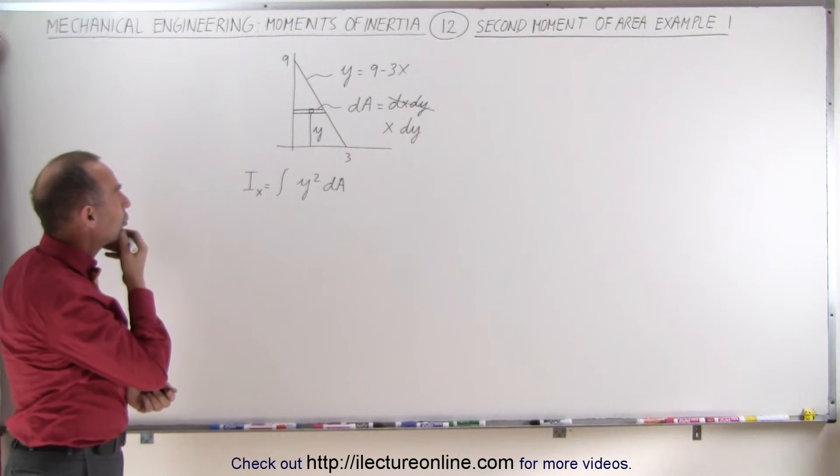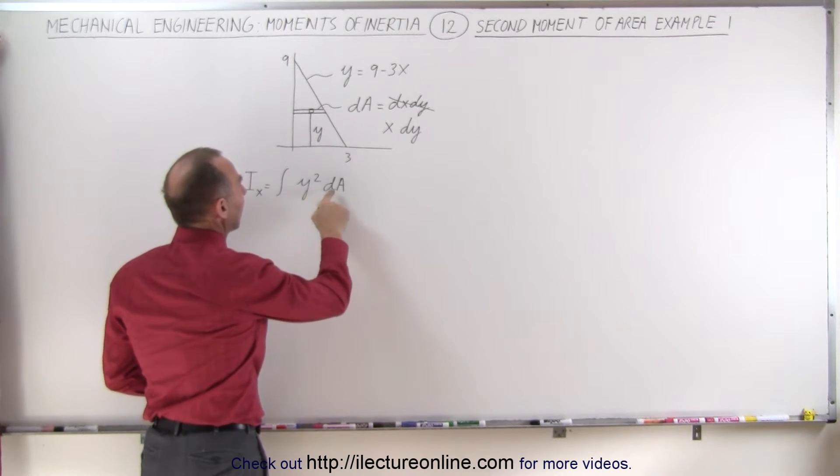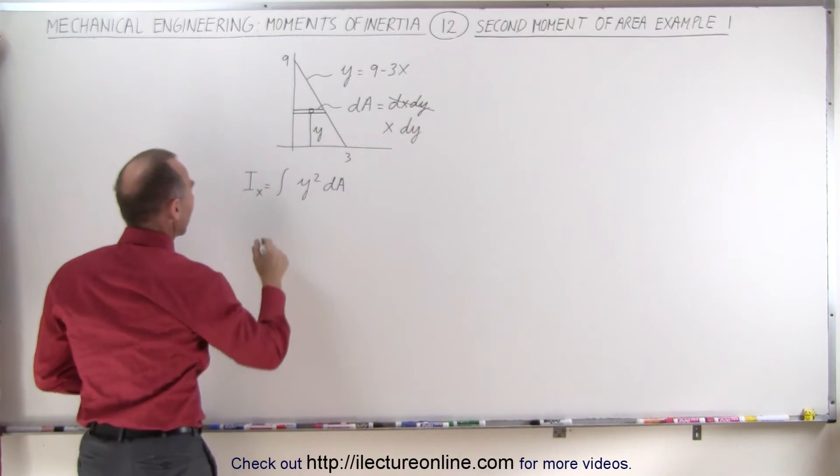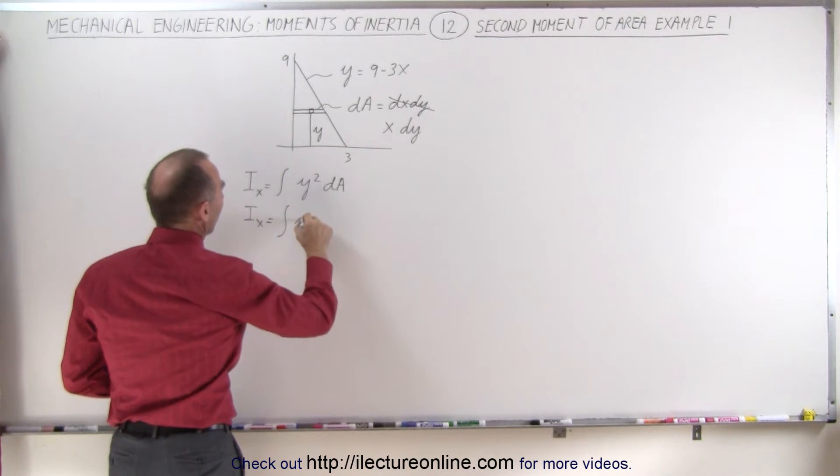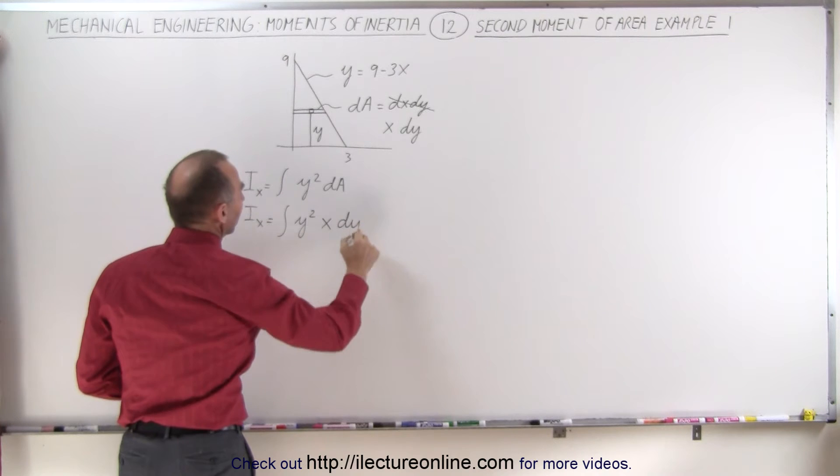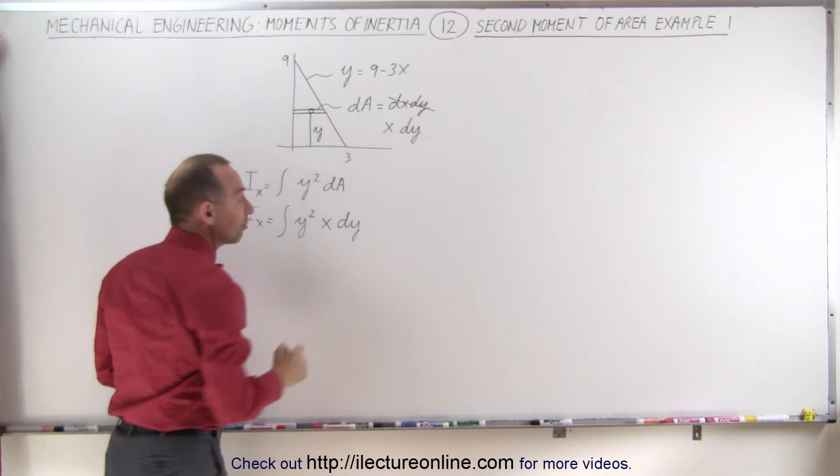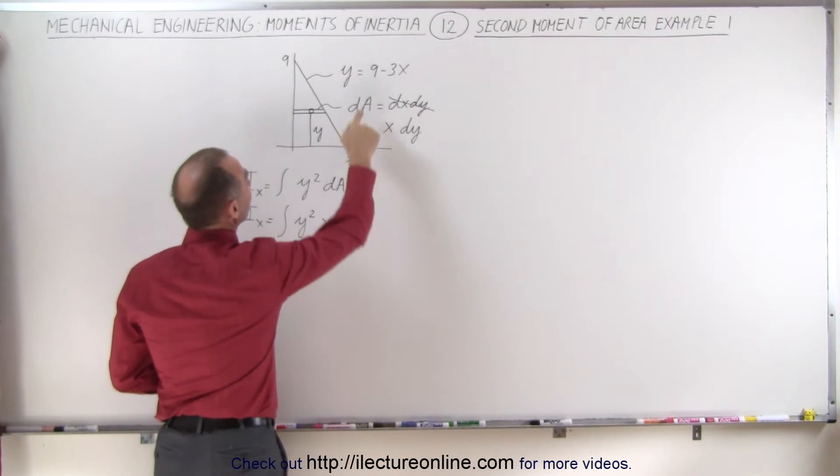Now what we need to also do here is realize that we have a y squared and when we plug in the dA let's see what we get. We have I sub x is equal to the integral of y squared and dA is now going to be x times dy. So since we have a differential of dy we want to replace x by what's equivalent to in terms of y.